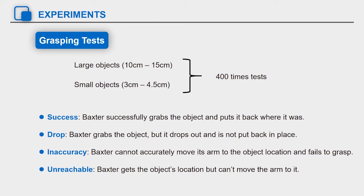Inaccuracy: Baxter cannot accurately move its arm to the object's location and fails to grasp. Unreachable: Baxter gets the object's location, but can't move the arm to it.